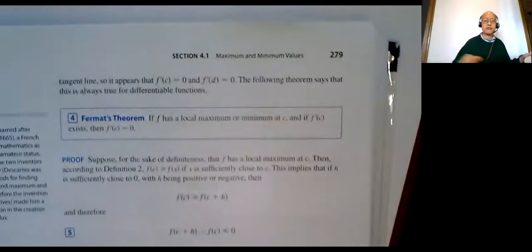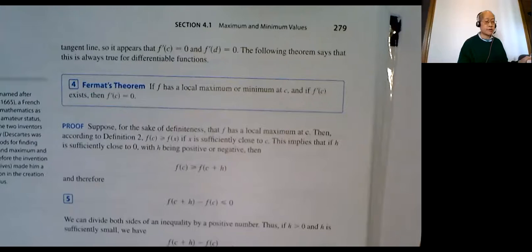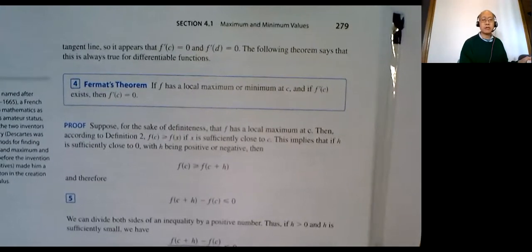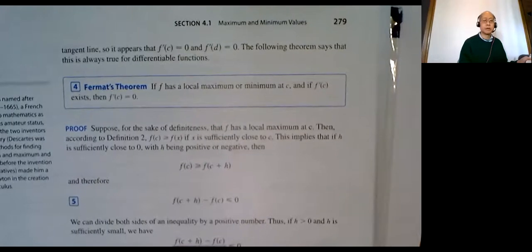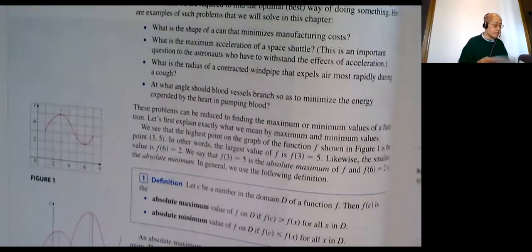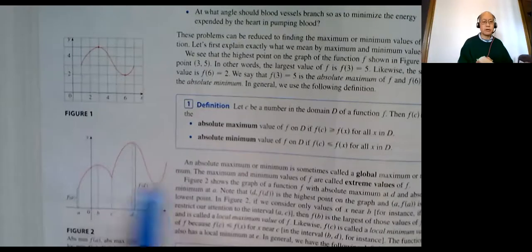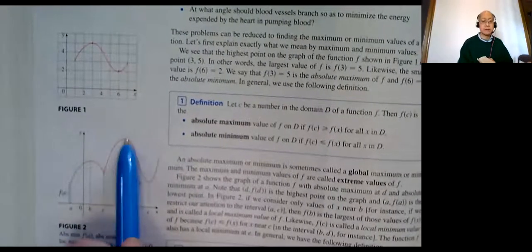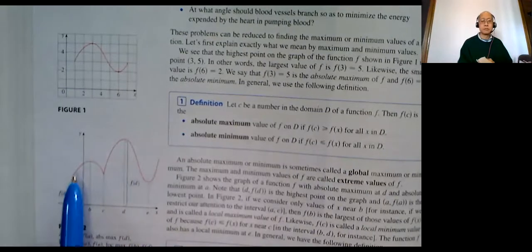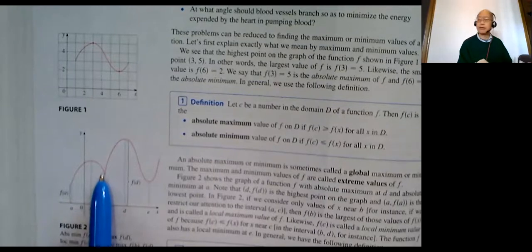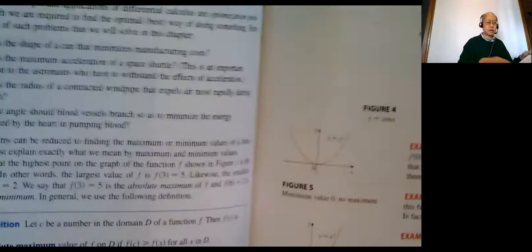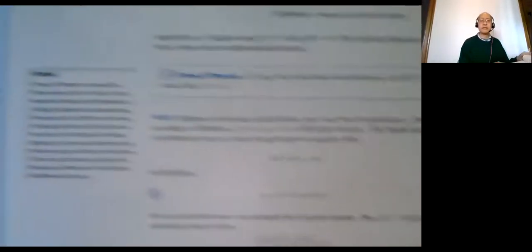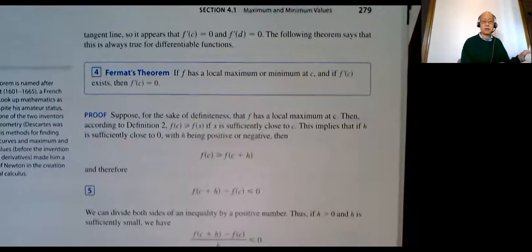Page 279, something called Fermat's Theorem. I don't think it's that important to write this one down right now, but you'll be doing some problems after the spring break that involve this quite a bit. If f has a local maximum or minimum at c and the derivative exists — f prime exists — then f prime has to equal zero. So if you have a max or min and you can draw a tangent line, it has to be zero. So that's something called Fermat's Theorem. We're going to be using that theme quite a bit when we're trying to find maximum and minimum values.